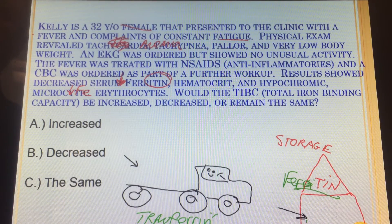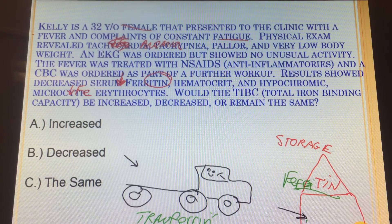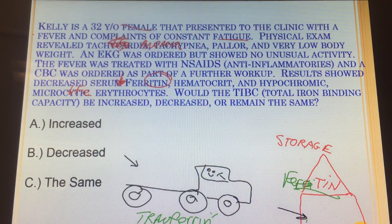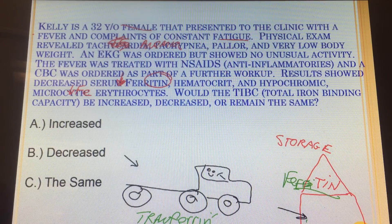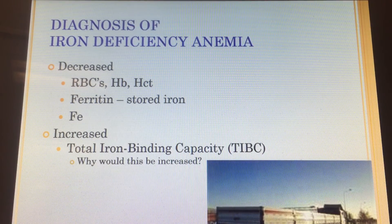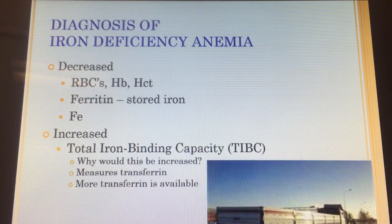Keep in mind that transferrin and ferritin are places where iron can be bound — whether it's being transported through the blood or in the ferritin storage state. Either way, if you have very little iron, you have a lot of room to put more in. Therefore the capacity to store more is very high. That's how I remember what total iron binding capacity means — it starts with ferritin with a tin roof for storage iron, and transferrin as the truck that carries it.